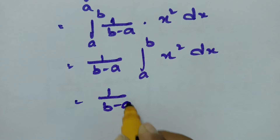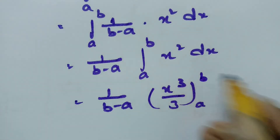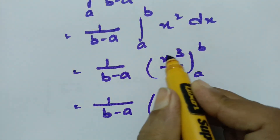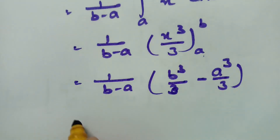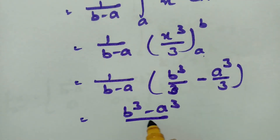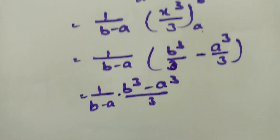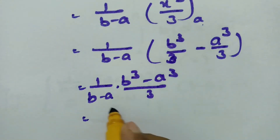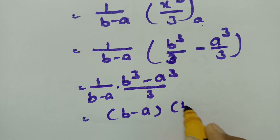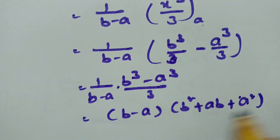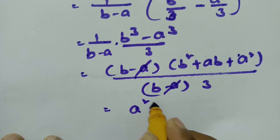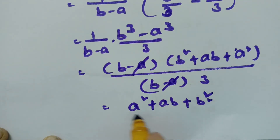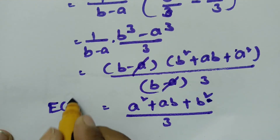Integrating x squared gives x cubed over 3, evaluated from a to b. Substituting the limits: 1/(b minus a) times (b cubed over 3 minus a cubed over 3), which equals (b cubed minus a cubed) divided by 3(b minus a). Factoring b cubed minus a cubed as (b minus a)(b squared plus ab plus a squared) and cancelling (b minus a), we get E(x squared) equals (a squared + ab + b squared)/3.